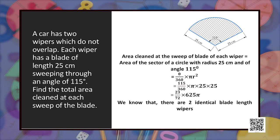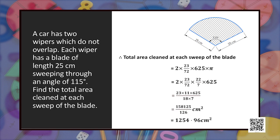Area cleaned by one wiper is the area of a sector with radius 25 centimeters and theta 115 degrees: theta by 360 into pi r square. Substituting theta as 115 and r as 25, we get 23 by 72 into 625 pi. For 2 identical wipers, total area is 2 into 23 by 72 into 625 into pi. Substituting pi as 22 by 7 and simplifying, we get 158125 divided by 126, which is 1254.96 centimeter square.